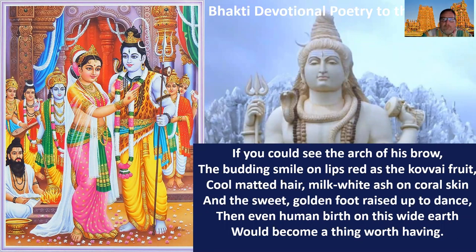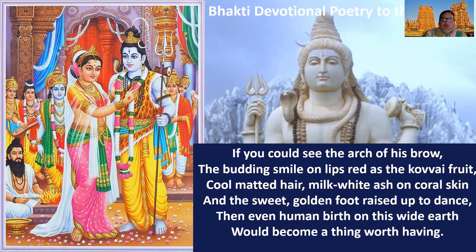People write poetry to Shiva called bhakti poetry. They also write it to Vishnu. One of his consorts wrote: 'If you could see the arch of his brow, the budding smile on lips red as the kovai fruit, cool matted hair, milk-white ash on coral skin, and the sweet golden foot raised up to dance — Nataraja — even human birth on this wide earth would become a thing worth having just so that you can be around Shiva.' So this is love poetry written to the gods. Very seldom in the Christian, Muslim, or Jewish world do we see love poetry written to a deity. Jesus is also described as the destroyer from a Western perspective. J. Robert Oppenheimer recited this quote from the Bhagavad Gita after the World War nuclear weapons test: 'Now I have become death, the destroyer of worlds,' because he knew civilians were going to die.